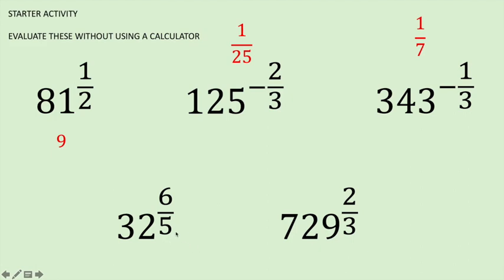The example on the bottom left: we have to do the fifth root of 32, which is 2, because 2 to the power of 5 is 32. Then we raise that to the power of 6: 2 to the power of 6 is 64. For the final example, 729 to the power of 2 thirds: we do the cube root of 729, which is 9, and then raise that to the power of 2. So 9 squared is 81.